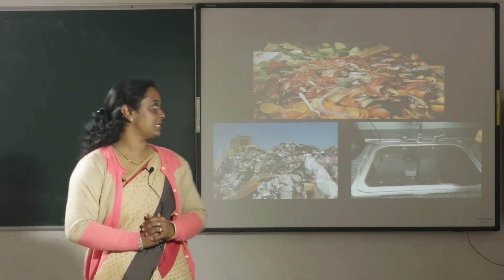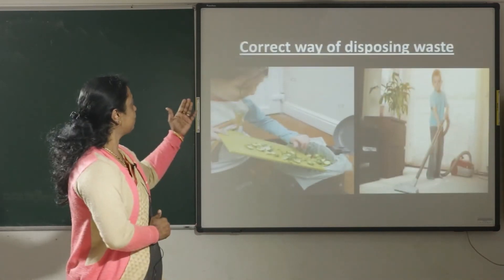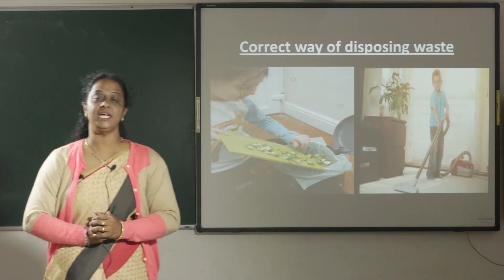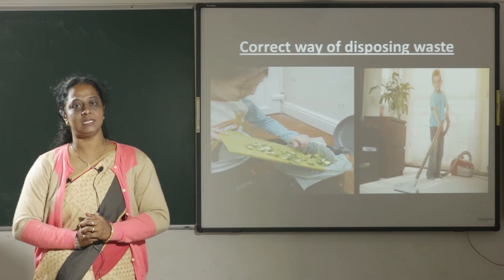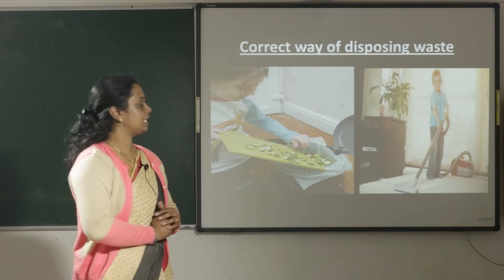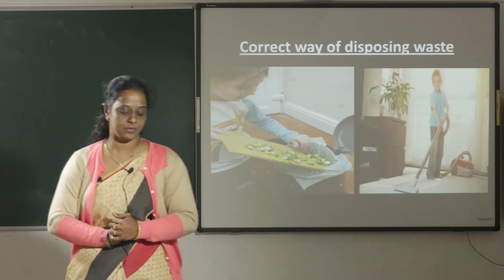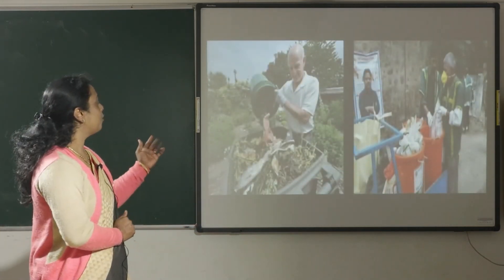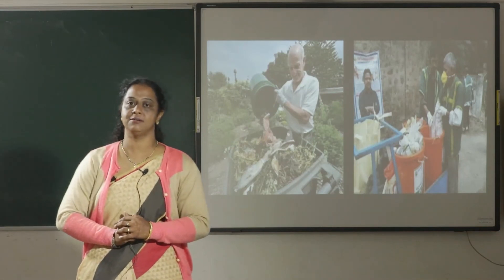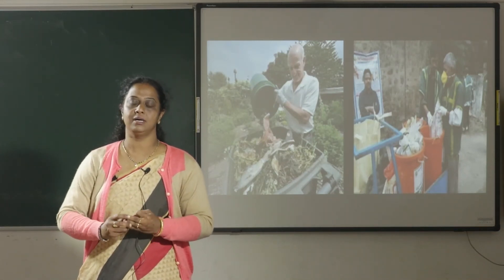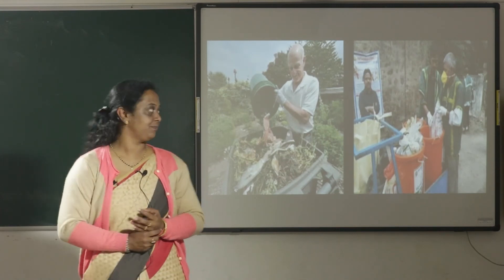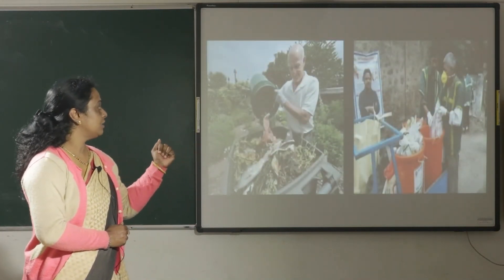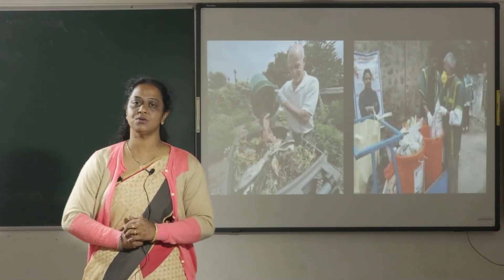Now let's learn the correct way of disposing waste. Put peeled vegetables and fruits into the dustbin, and keep your house neat and clean. Do not throw waste on the street. Put dry waste like dry leaves, paper, and plastics into the dustbin. Give the wet waste to the person who comes to collect it.